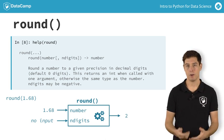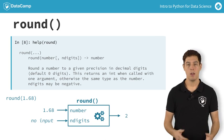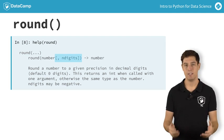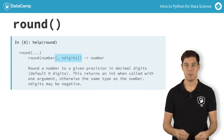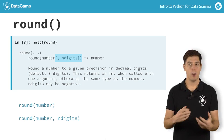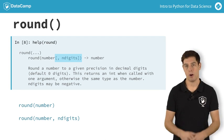How was I so sure that calling the function with a single input would work? Well, in the documentation, there are square brackets around the comma and the n digits here. This tells us that you can call round in this form, as well as in this one. In other words, n digits is an optional argument.